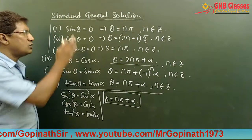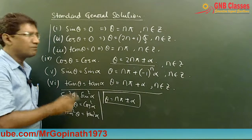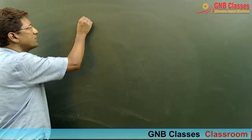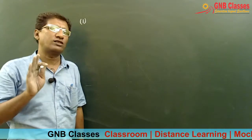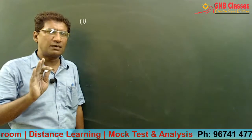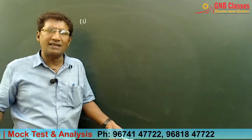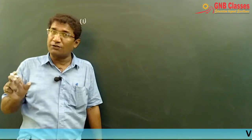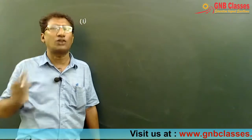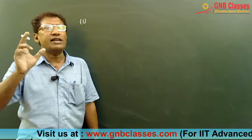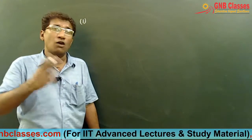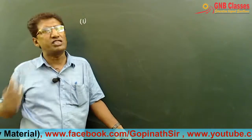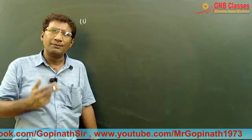You have to remember all those standard general solutions. Now, one important thing: try to avoid squaring both sides of the equation. It is always advisable not to square. If we cannot solve without squaring, we will square, but after getting the answer you must substitute those values back into the given equation to check whether they satisfy it or not. If they don't satisfy, we reject those values, since squaring can introduce extraneous solutions.